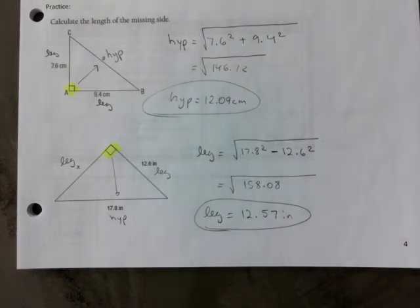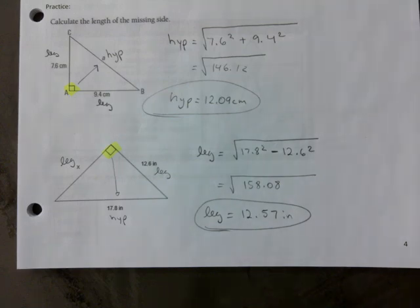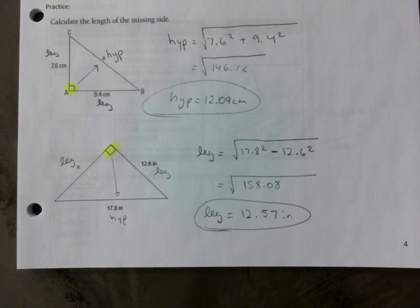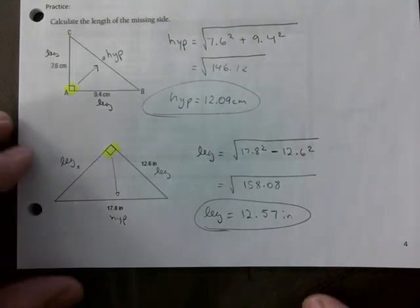Go to page five — there's a little trick there but you should be able to do it; it requires you to do the Pythagorean theorem twice. The answers are at the bottom of that page — just flip it upside down. Try page five before we move on. Make sure you're able to do it on your calculator — that's all I'm asking.